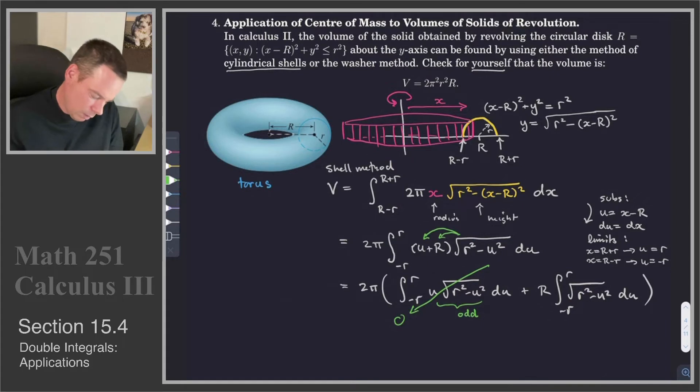How about the other integral? That's also a straightforward one to do. Because this integral just represents half the area of a circle. The square root of r² - u² is just the upper semicircle, and we're integrating from -r to r. So that means that this integral evaluates to half π little r squared.